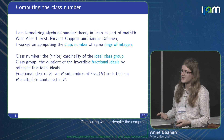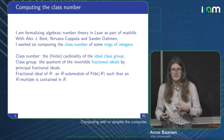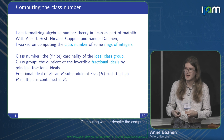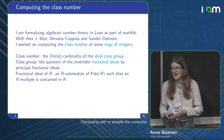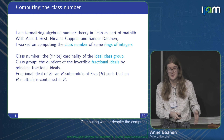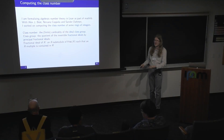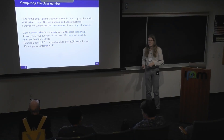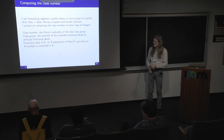The idea behind the class group is that it tells you how far your ring is from being a principal ideal domain. In a PID, working with ideals is exactly the same as working with normal elements. If you have a more complicated class group, this difference becomes bigger, so you need to be more careful with your computations.